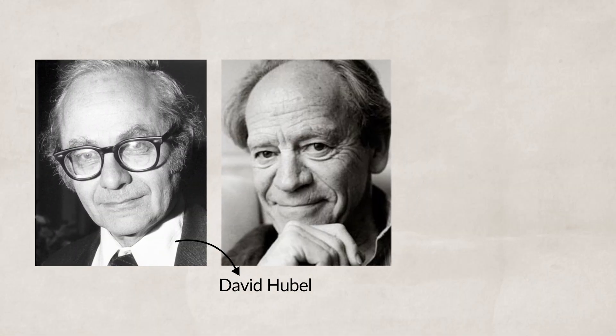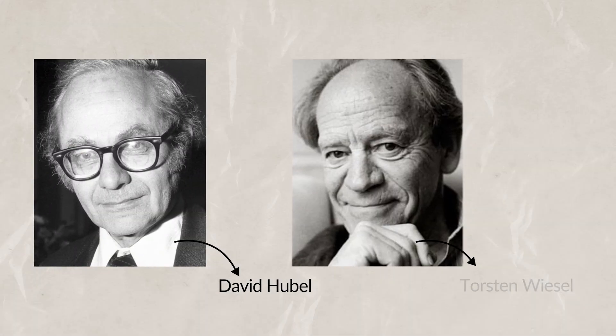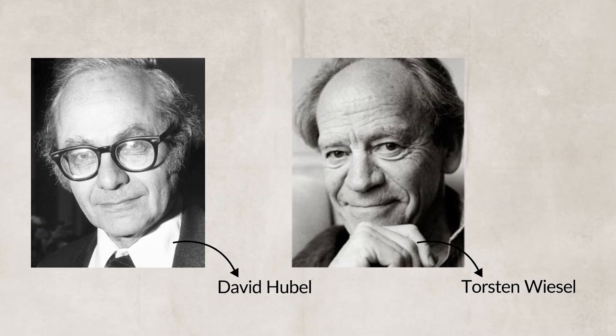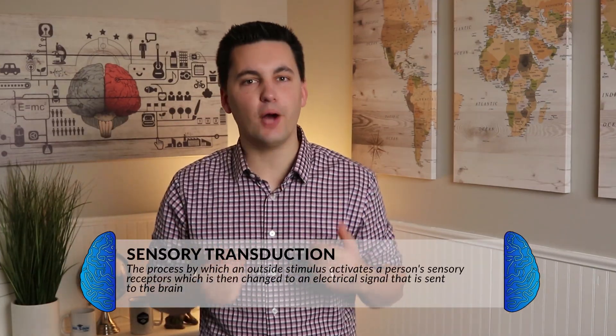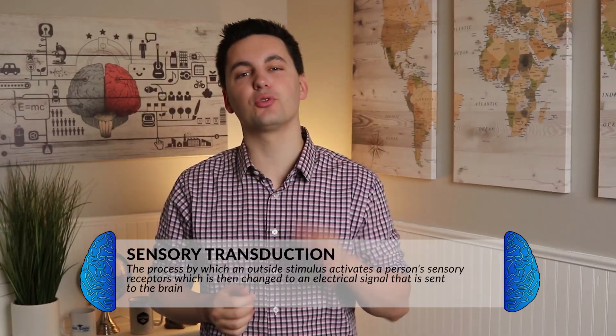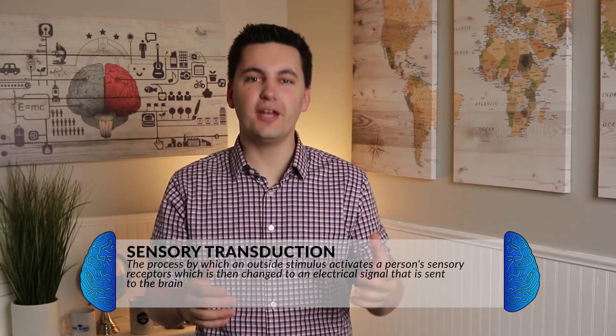Much of our understanding of information processing in the visual system comes from research done by David Hubel and Torsten Wiesel, who demonstrated that specialized cells in the brain respond to visual features of the environment. Starting with sensory transduction — when you take in an outside stimulus through one of your senses, which will then activate your sensory neurons, creating a sensation for you.